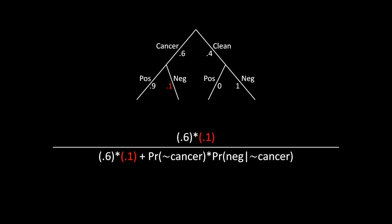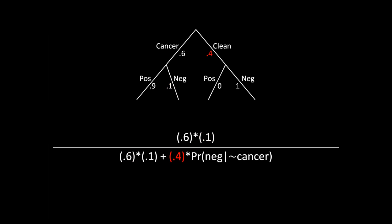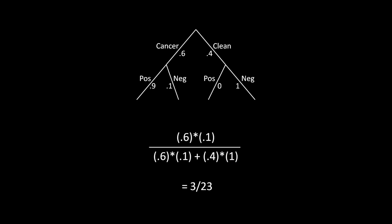On the right side of the tree, the probability that you don't have cancer is 40%, and we multiply that by the probability of a negative result given that you don't have cancer, which is 100%. Once you fill it all in, it's a simple calculation. Doing the math, you get exactly 3 over 23, or roughly 13%. So if the screening says you don't have cancer, the probability that you actually do have cancer is still about 13%, despite what the screening said.